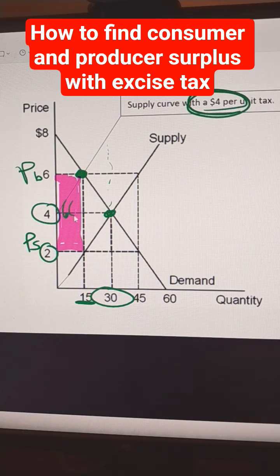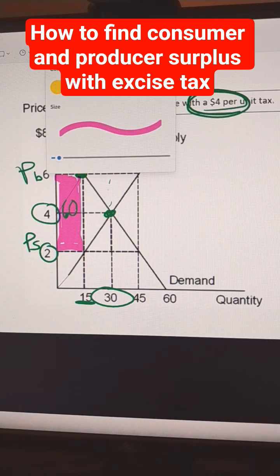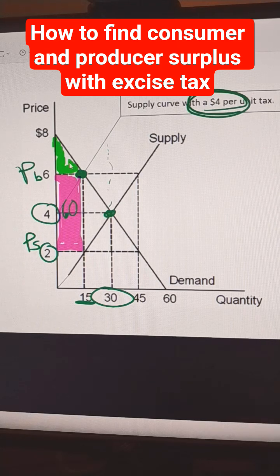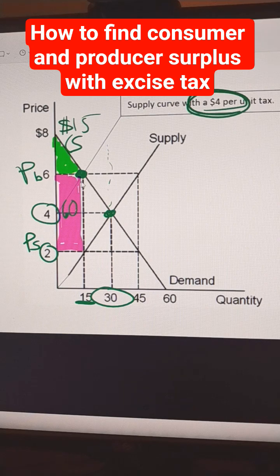$60 is the amount of the tax. The consumer surplus is the area below the demand curve and above the price that the buyers pay. So this would be right here. That would be 1/2 times 2 times 15, which we can calculate in our head—it's just 15.